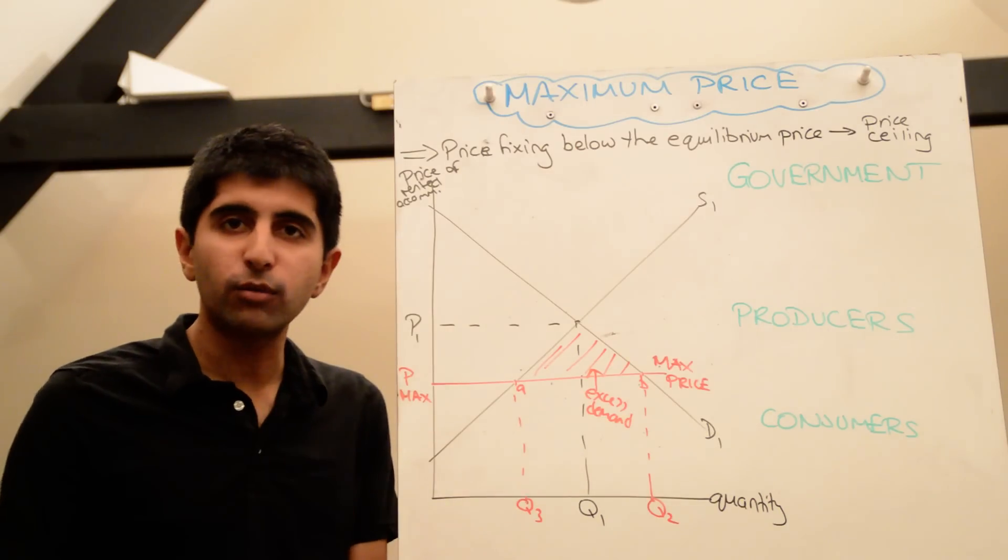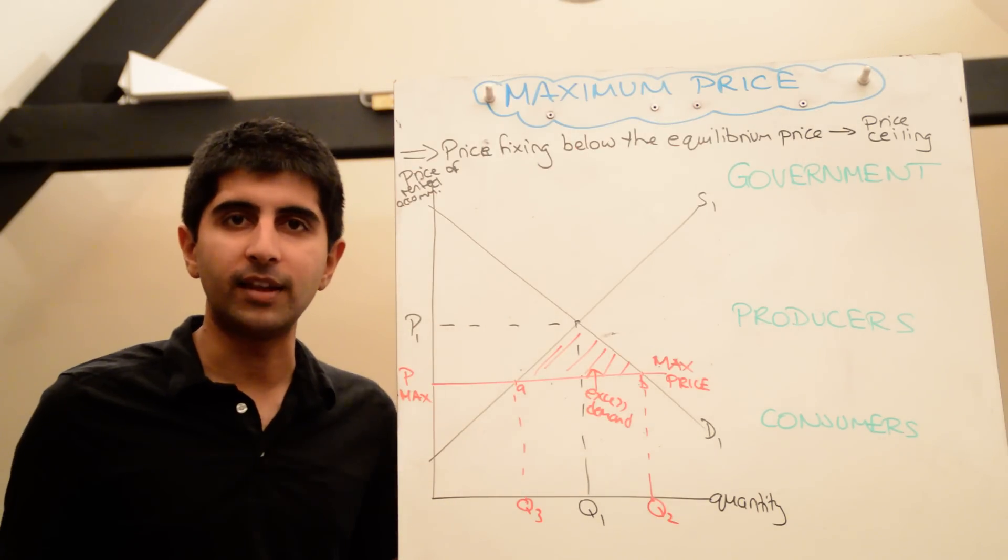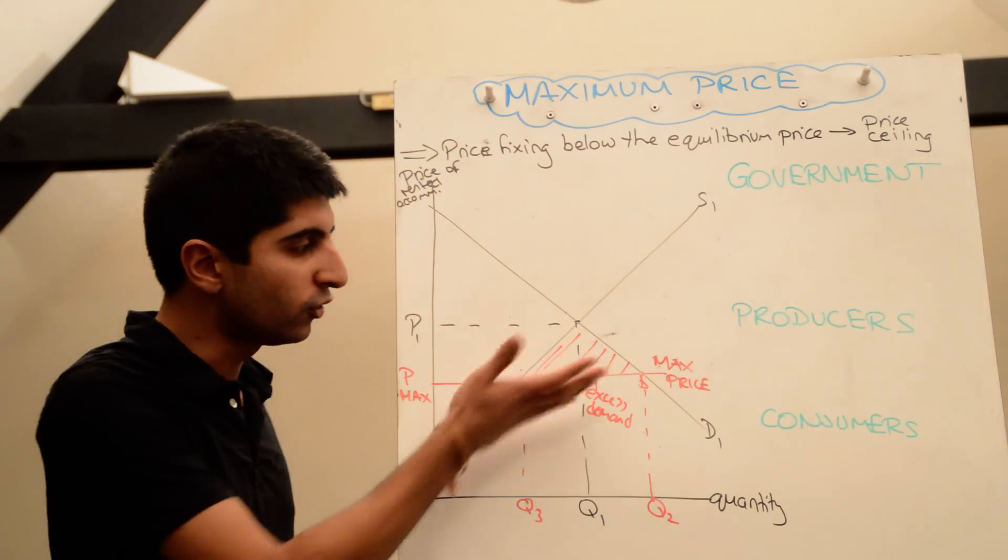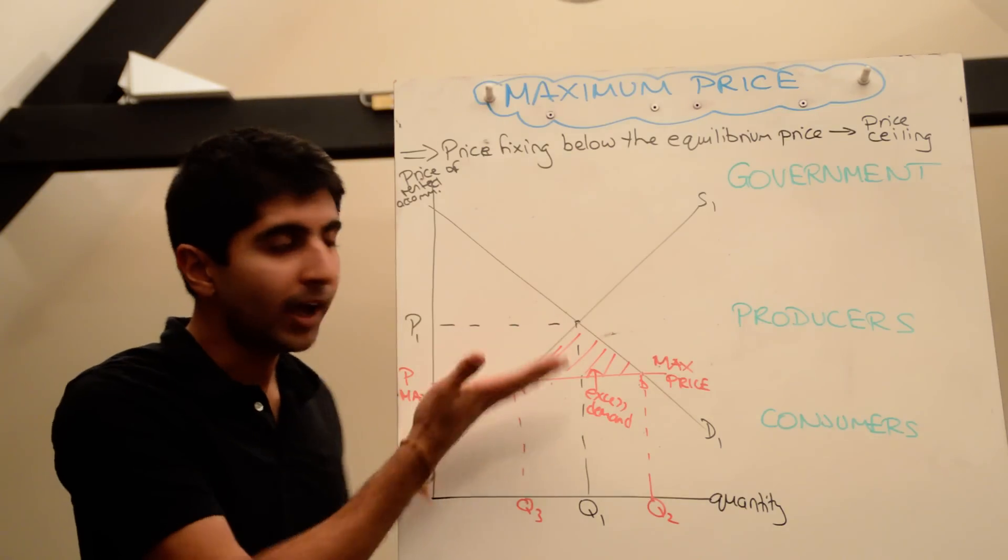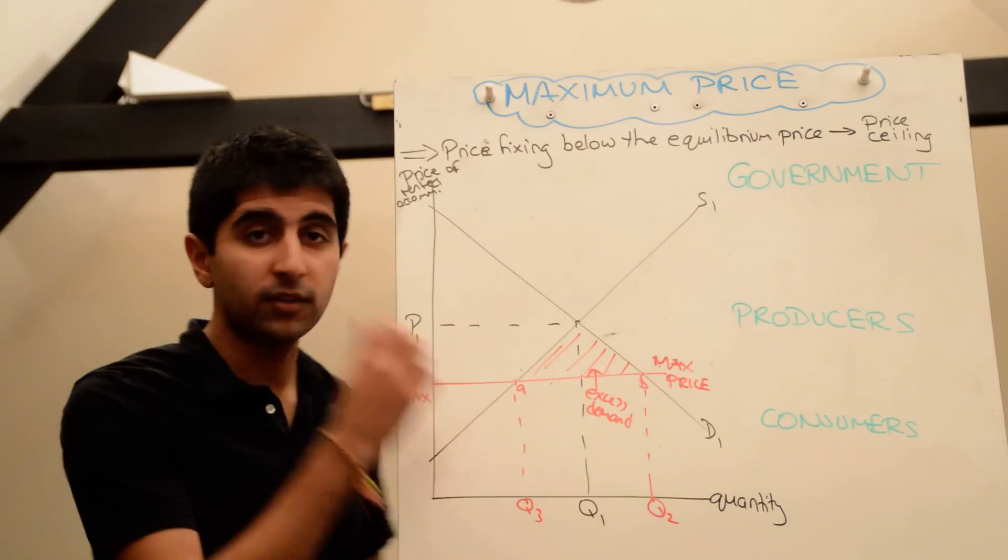And if we don't deal with it, the only way to ration it is by queuing, or allowing a black market to exist, where illegal traders can exploit the fact that there are consumers that are willing to pay a higher price, maybe lower than equilibrium price, still a higher price than the maximum price, and they can start trading illegally, trying to ration the demand themselves.